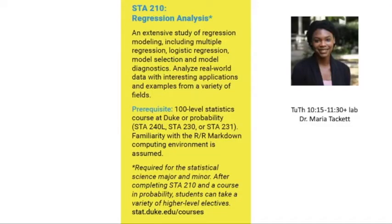Students who have taken any 100-level statistics course at Duke, or probability theory, are able to move on to regression modeling. This course assumes familiarity with the R and R Markdown computing environments, so if you're using probability as the prerequisite, you might run through an online R tutorial over winter break. Note that we'll have some R training early in the semester. Regression gives students an excellent introduction to statistical models from an applied perspective. Once students have completed regression and a probability course, the door is open for a wide variety of higher-level electives. Every so often, we have a student with very strong skills in linear algebra seeking a more theoretical introduction — if this is you, drop me an email and we can discuss graduate-level options. Now, let's hear from Professor Tackett about the course.